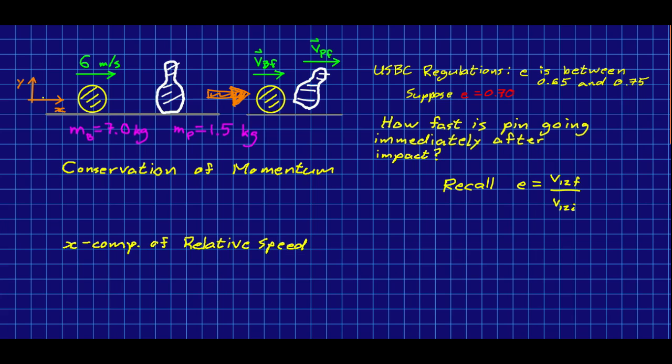Working with an x-axis to the right and noting that the initial velocity of the pin is zero, I can write down the conservation of momentum like this. There's no term here on the initial side for the pin because it's not moving at all.